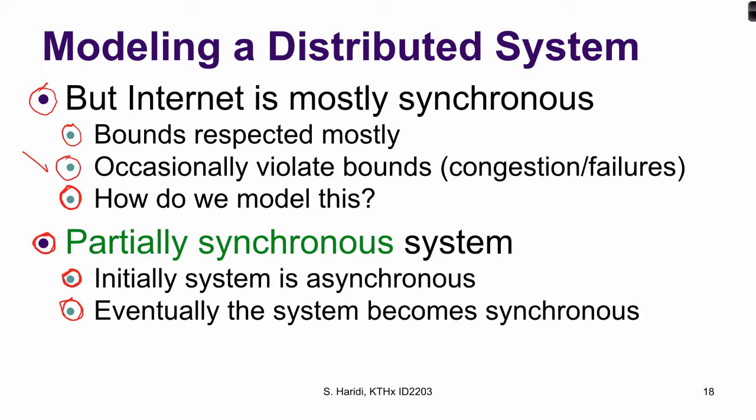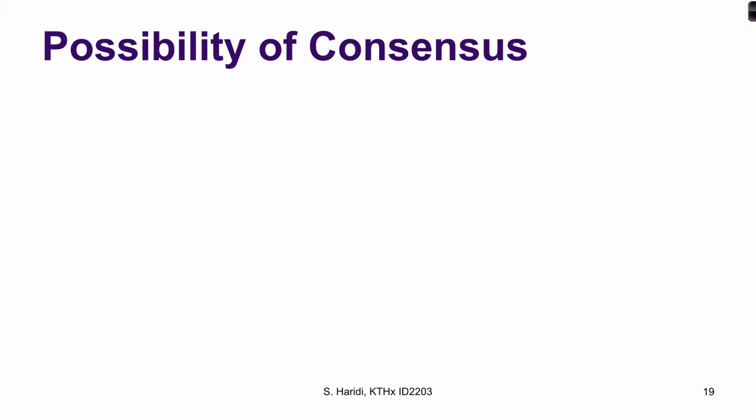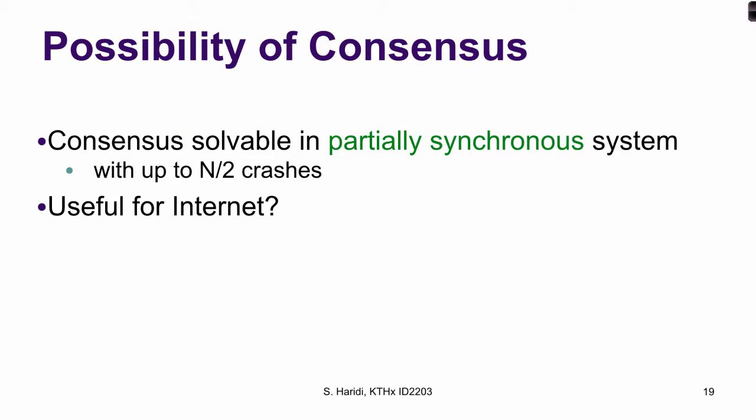We will see how to design correct algorithms for these kinds of systems. Consensus is solvable in partially synchronous systems — in fact, consensus is solvable with up to, but not including, half of the processes crashing. And if we ask ourselves whether this is useful for internet services, the answer is definitely yes.